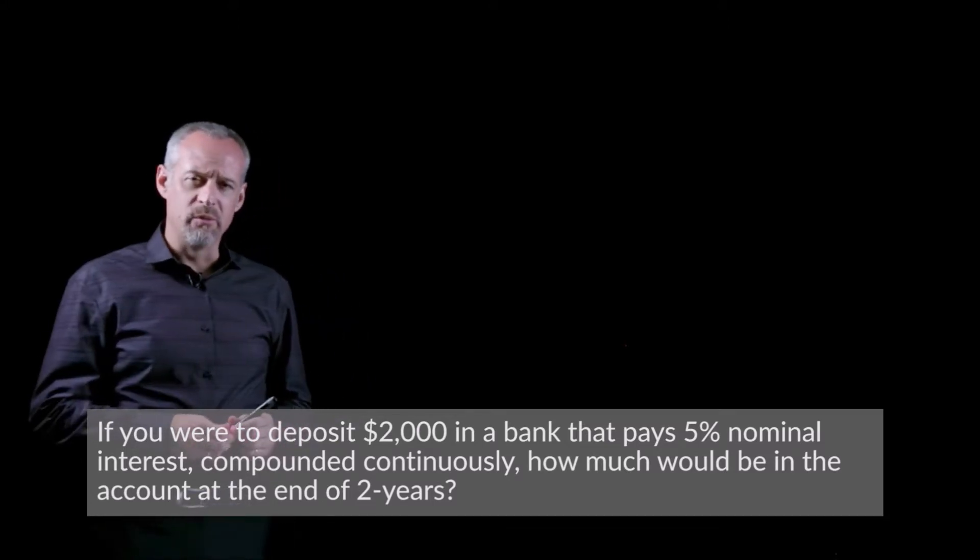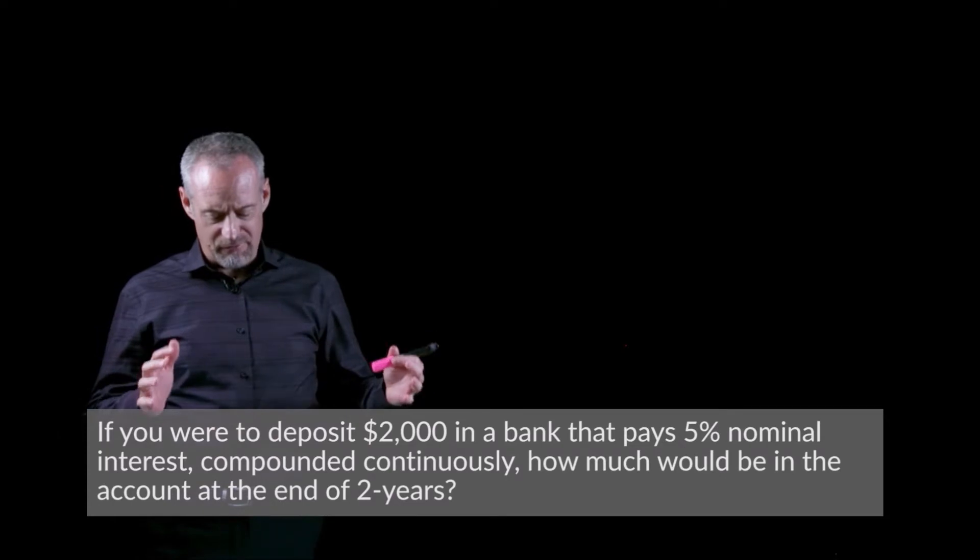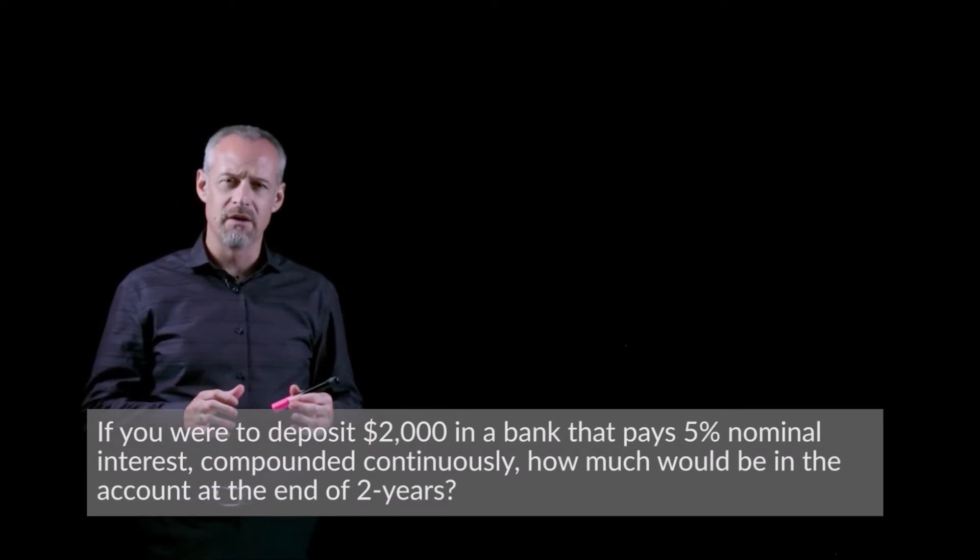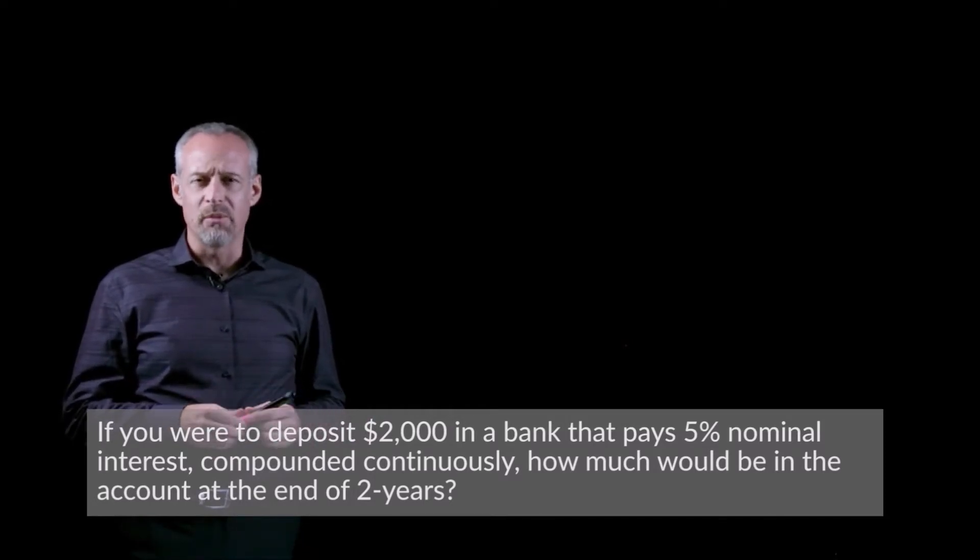When you read this problem, you may notice some curious wording. The problem talks about a 5% interest rate compounded continuously. What does that mean? Well, in order to explain it properly, we're going to need to take a step backwards.